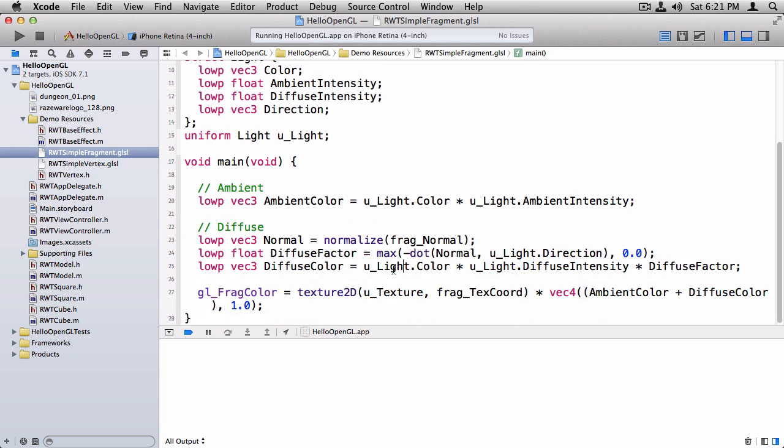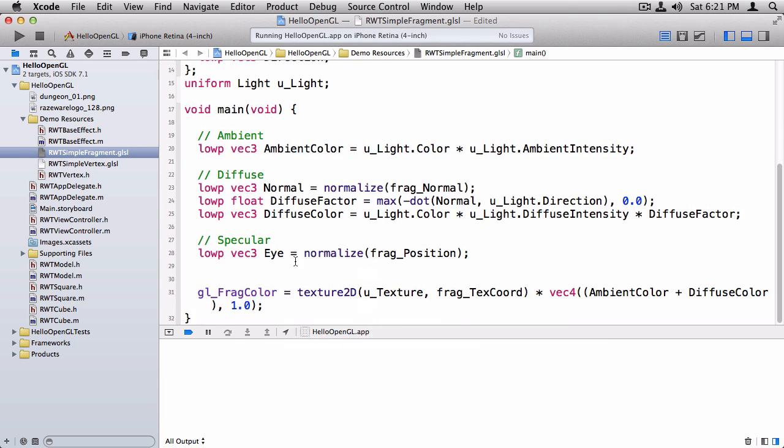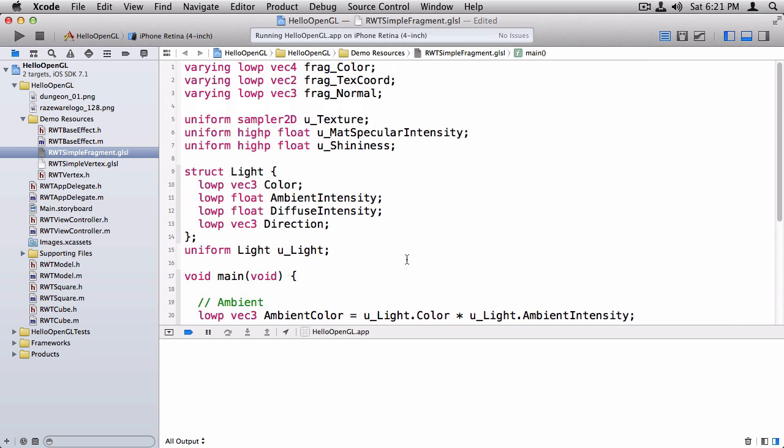All right, scrolling down, we'll go ahead and start adding in our code here. So the first one is to get the vector from the eye to the position. Since we're working in camera space here, all we have to do is normalize the position, the input variable that's passed in here. Oh, and we have a new input variable for the frag position. And I better do that now before I forget.